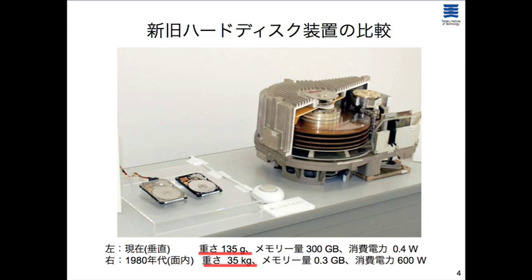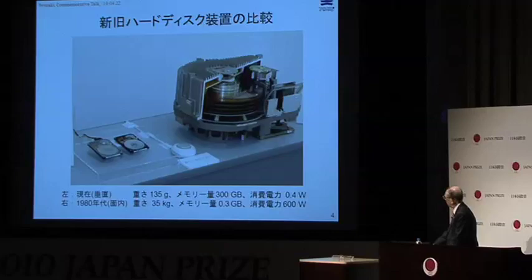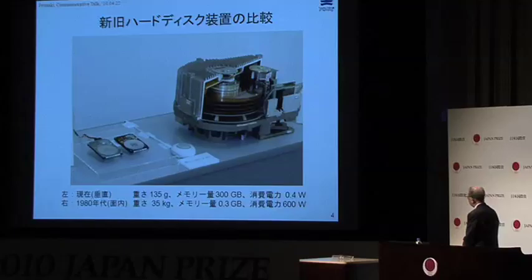Comparing a hard disk from the 1980s with today's, the memory capacity has increased about 1,000-fold, while weight has fallen to a few hundredths and power consumption to one-thousandth. Such innovation in recording devices drove the rapid shift to perpendicular hard disk recording. Magnetic recording itself was invented about 110 years ago by a Dane named Poulsen.